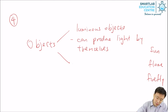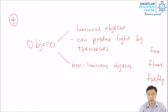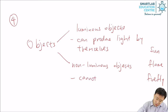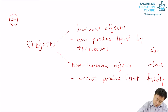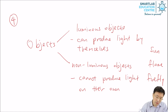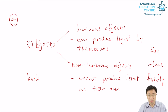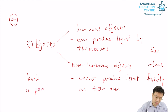The other category is non-luminous objects. These are things that cannot produce light on their own. Examples: a book cannot produce light on its own, a pen cannot produce light on its own, a rock cannot produce light on its own.